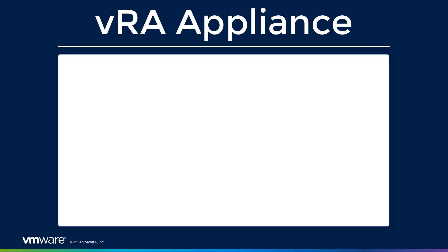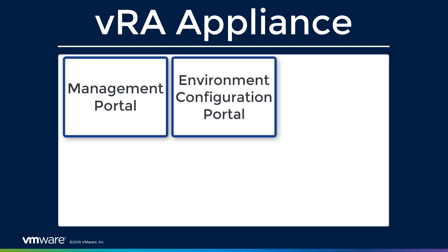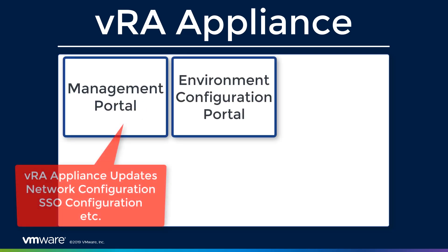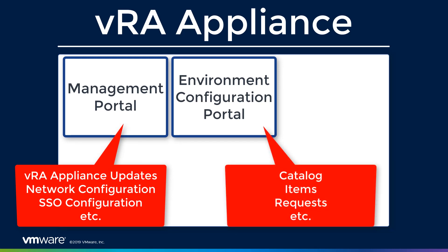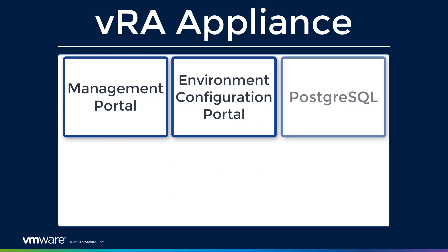Inside our VRA appliance, we have a product portal — we actually have two of them. One is used for management: how do we actually configure the appliance itself? And the other one is how do we configure our environment? To support those portals, we have a Postgres database.